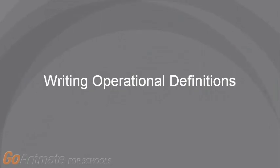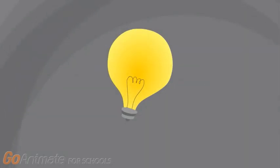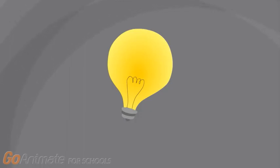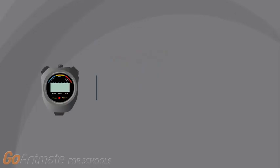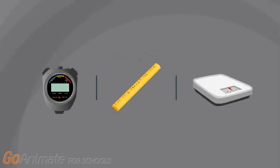Welcome to the video on writing operational definitions. Operational definitions define a concept on the basis of the specific operations used for measurement. They specify the properties of an observation that are required to assert the presence or absence of the condition. In other words, defining a concept based on how you will measure it.